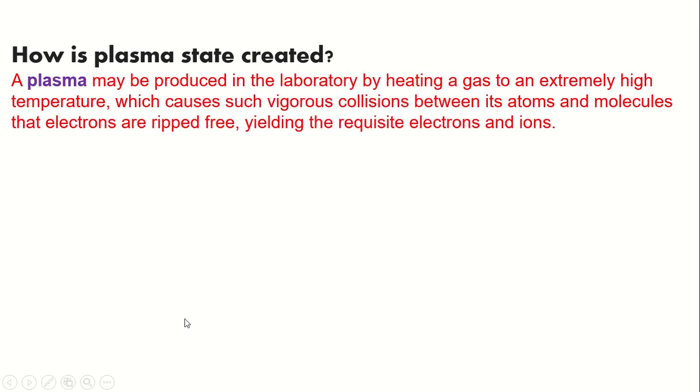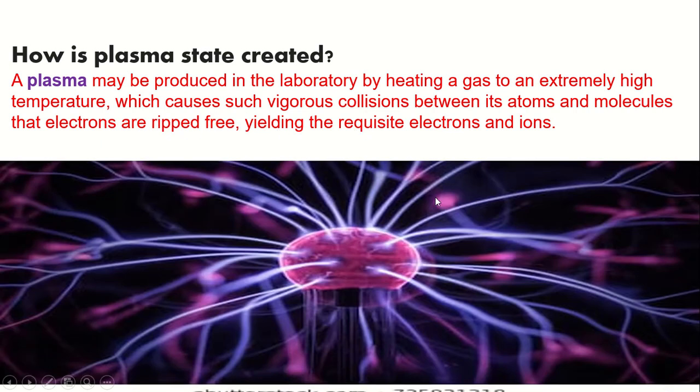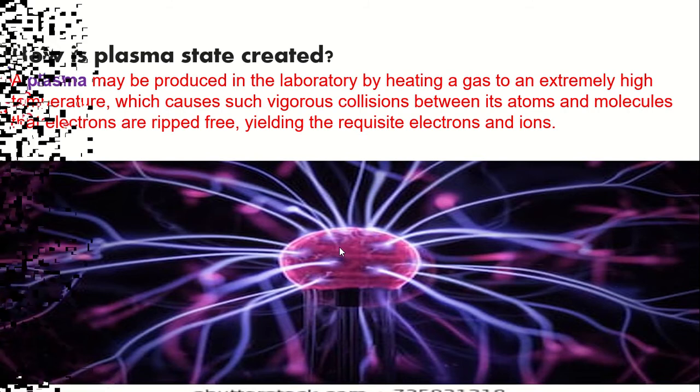How is plasma state created? A plasma may be produced in the laboratory by heating a gas to an extremely high temperature, which causes such vigorous collisions between its atoms and molecules that electrons are ripped free, yielding the requisite electrons and ions. This is the plasma state, which is the fourth state of matter.